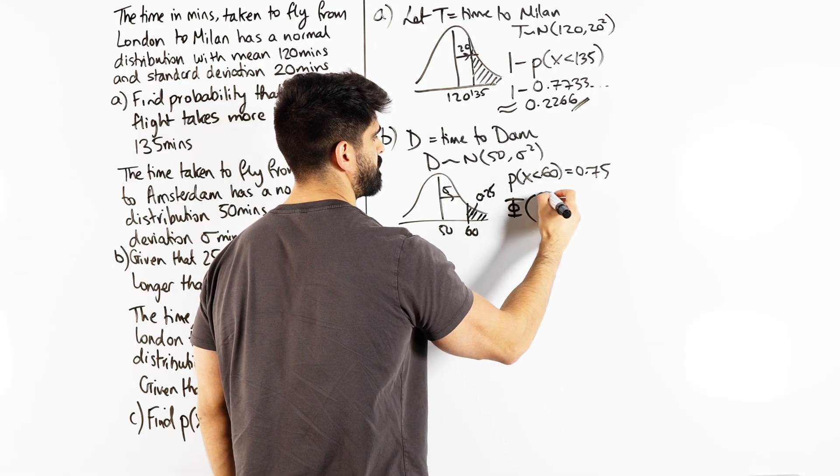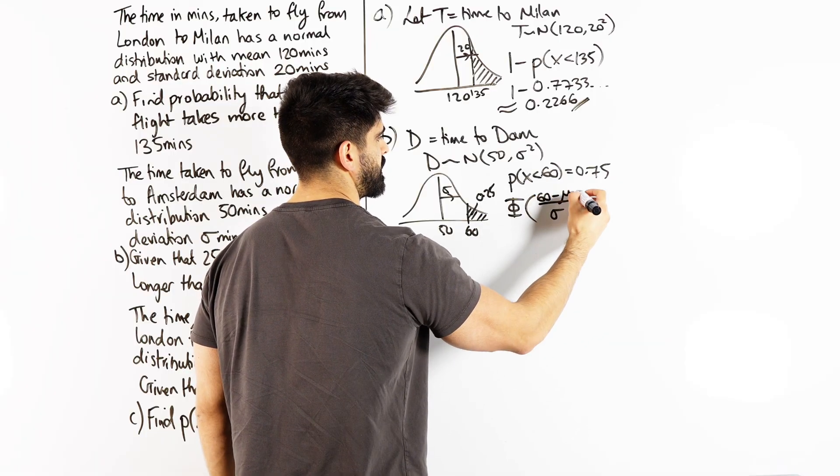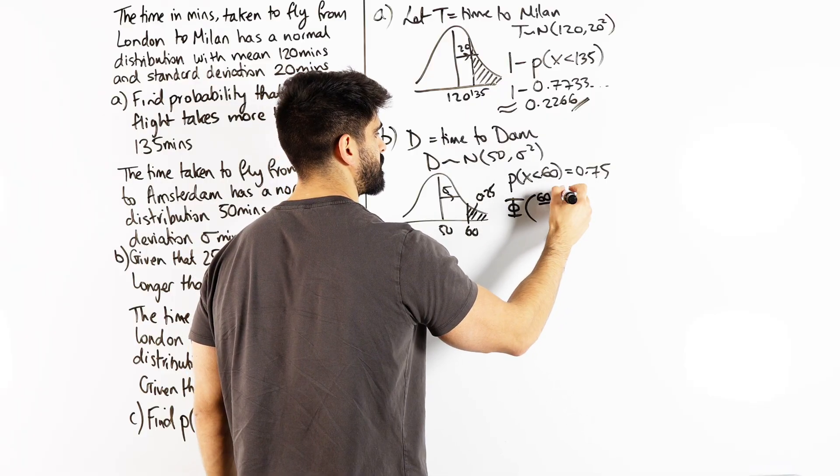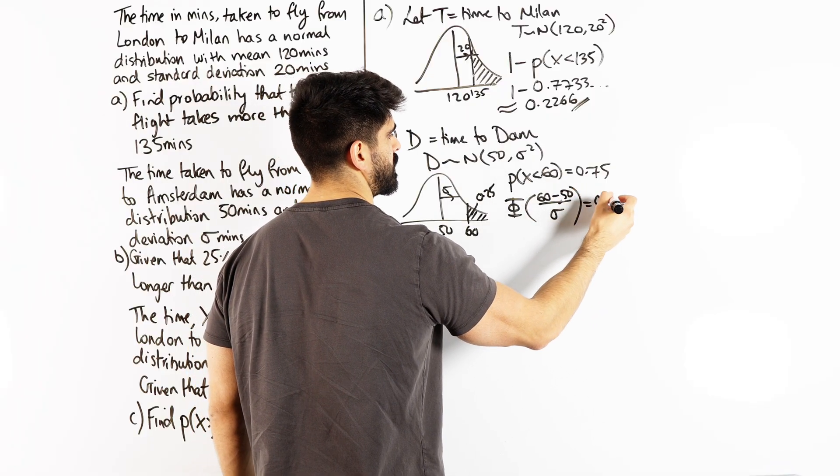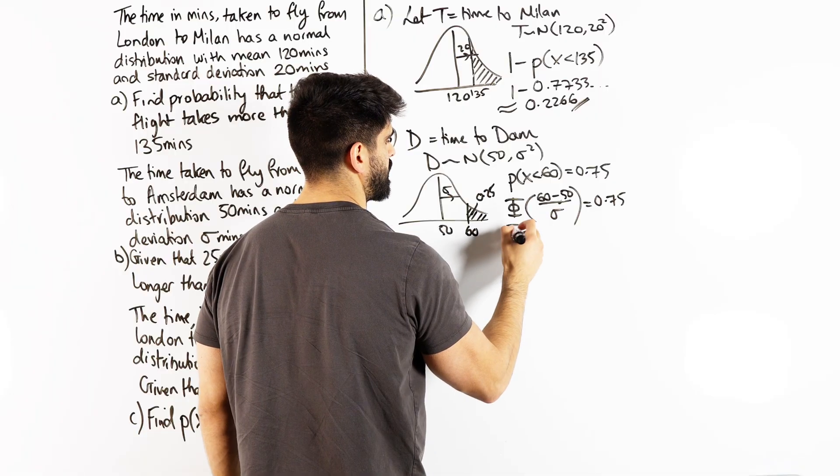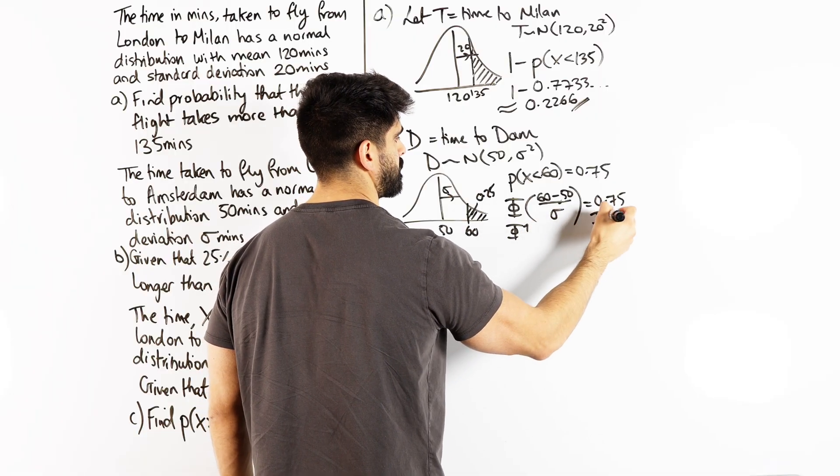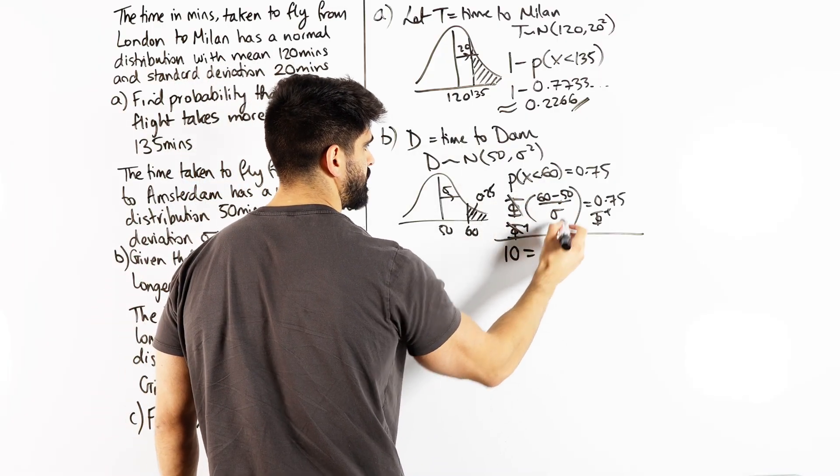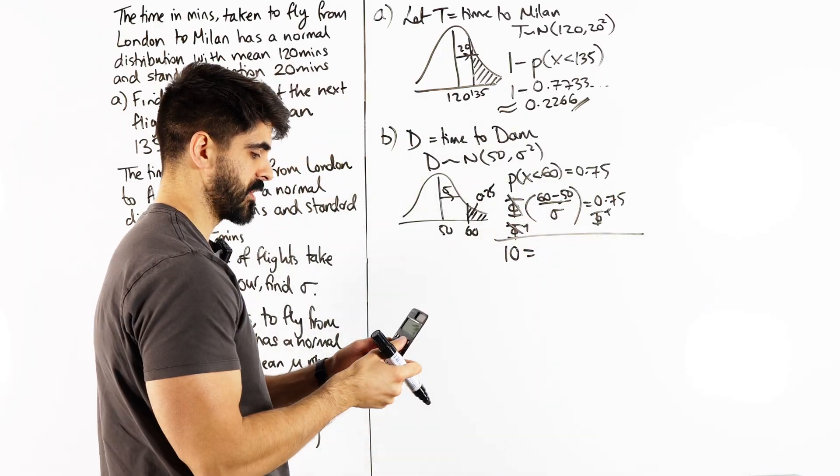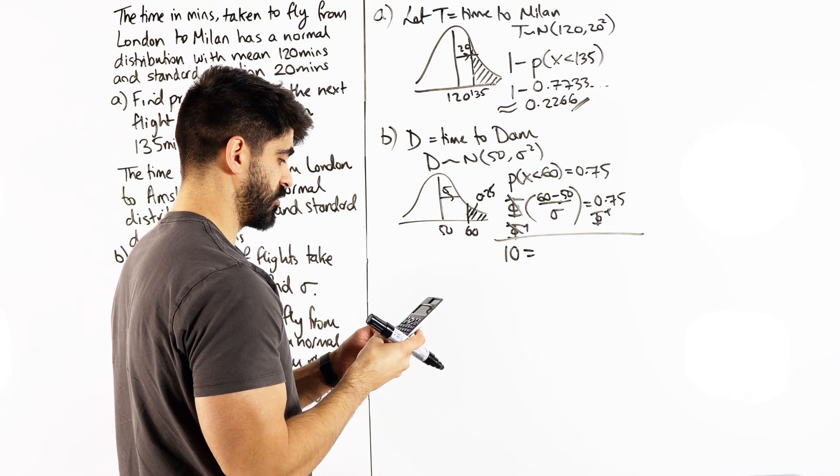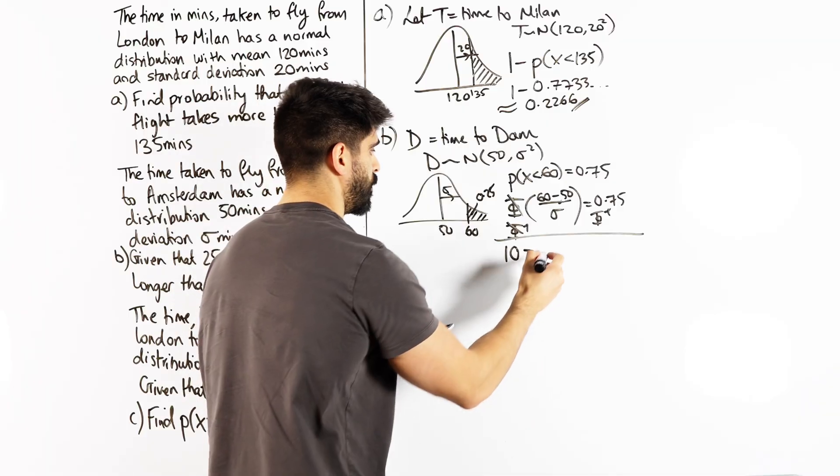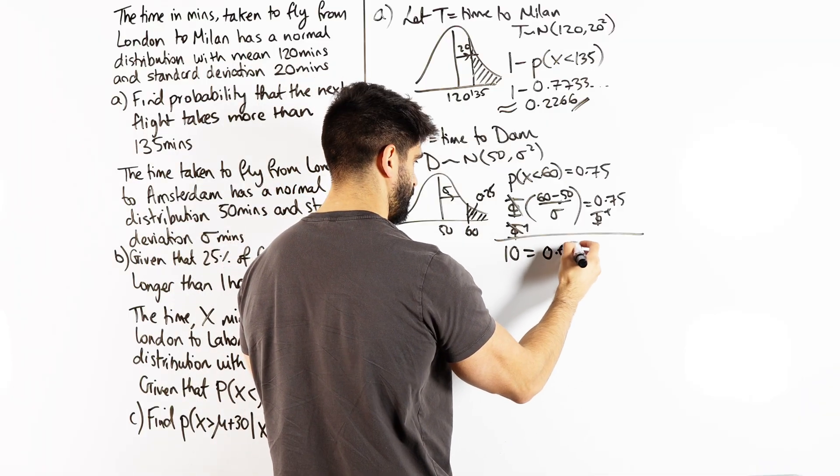Now we can convert it into phi. So phi, we do 60 minus the mean, divided by the standard deviation. But in fact, we know what the mean is. It's 50 is 0.75. And then we're going to inverse phi. So here we get 10 is, and I'm going to multiply through by phi as well. So menu 7, inverse normal, area is 0.75. So I get 0.6744.